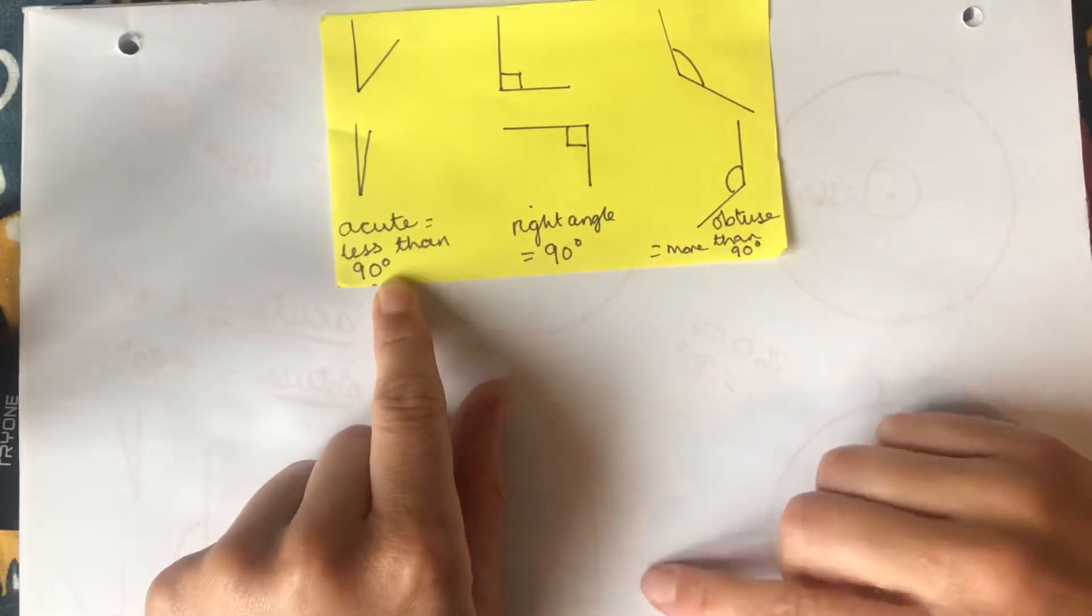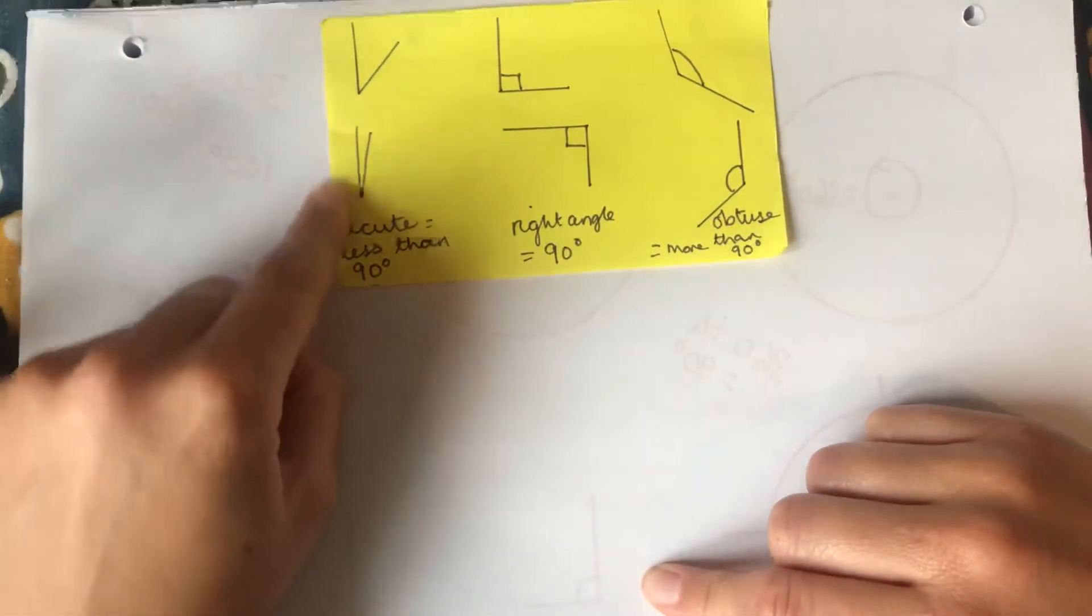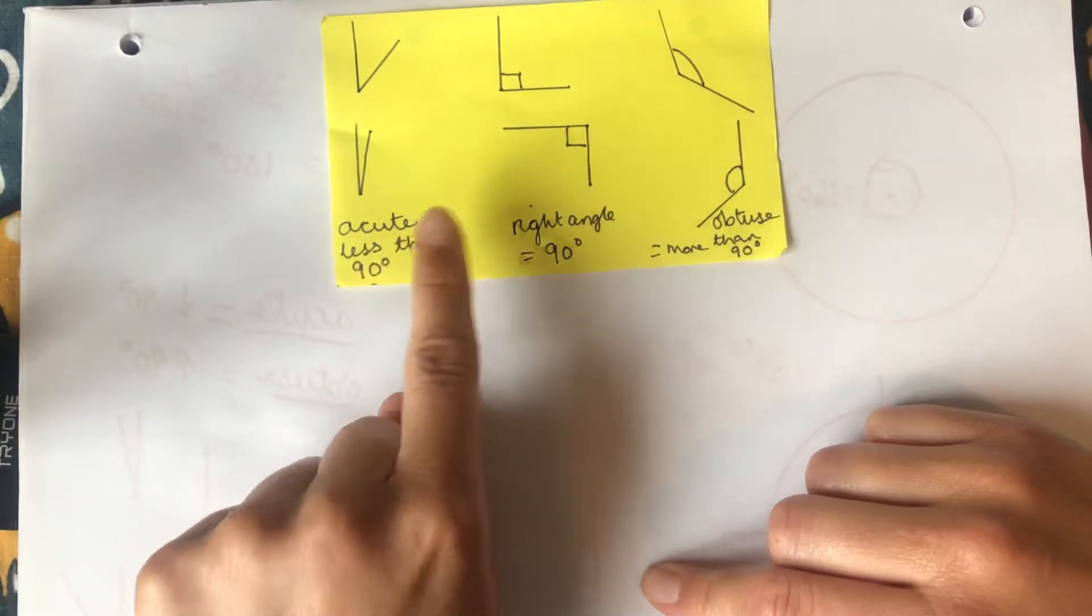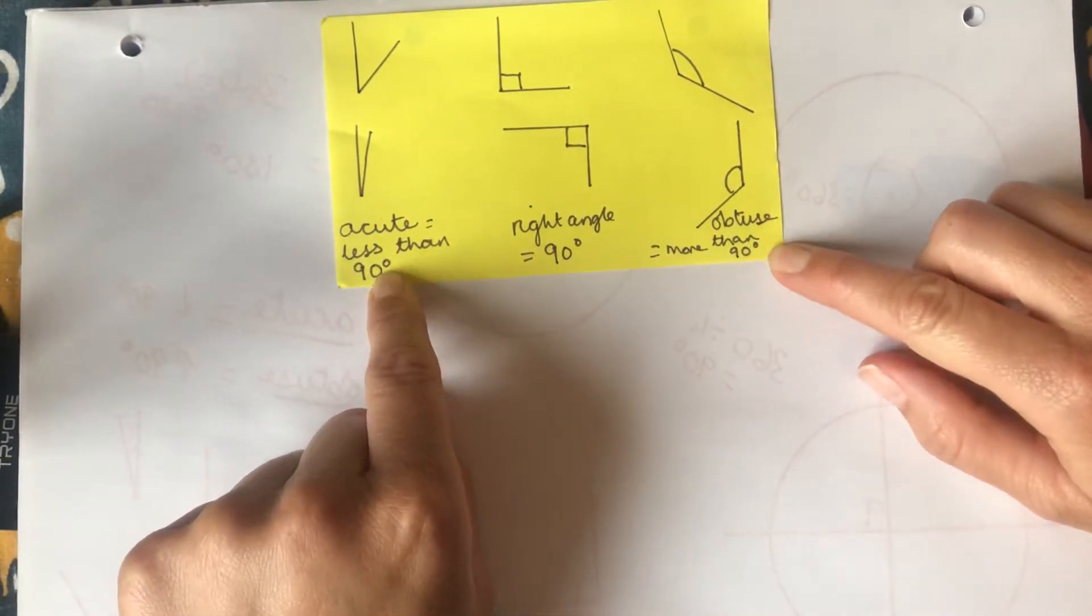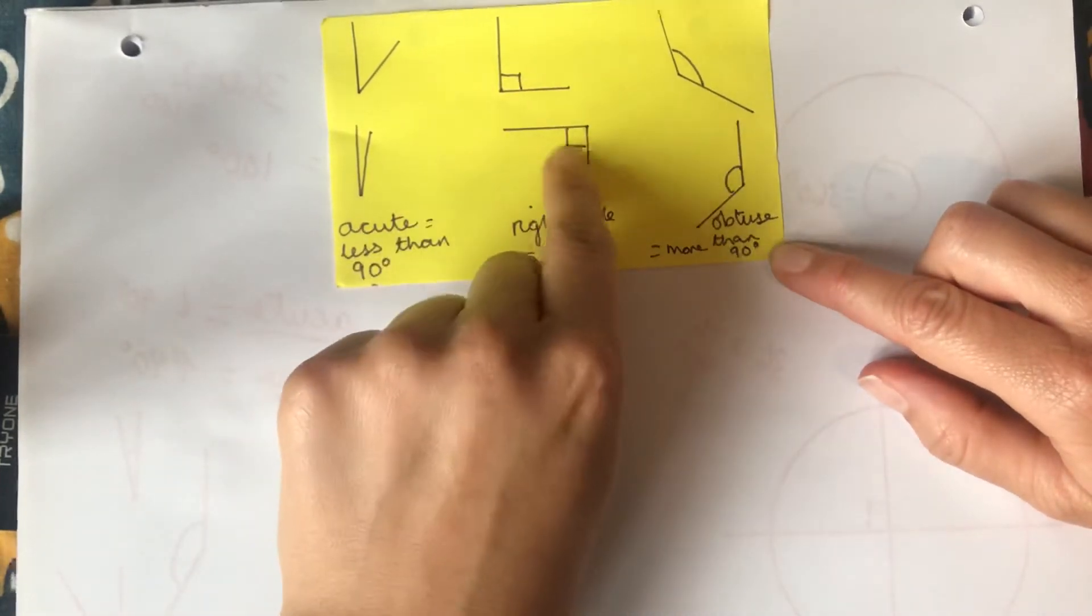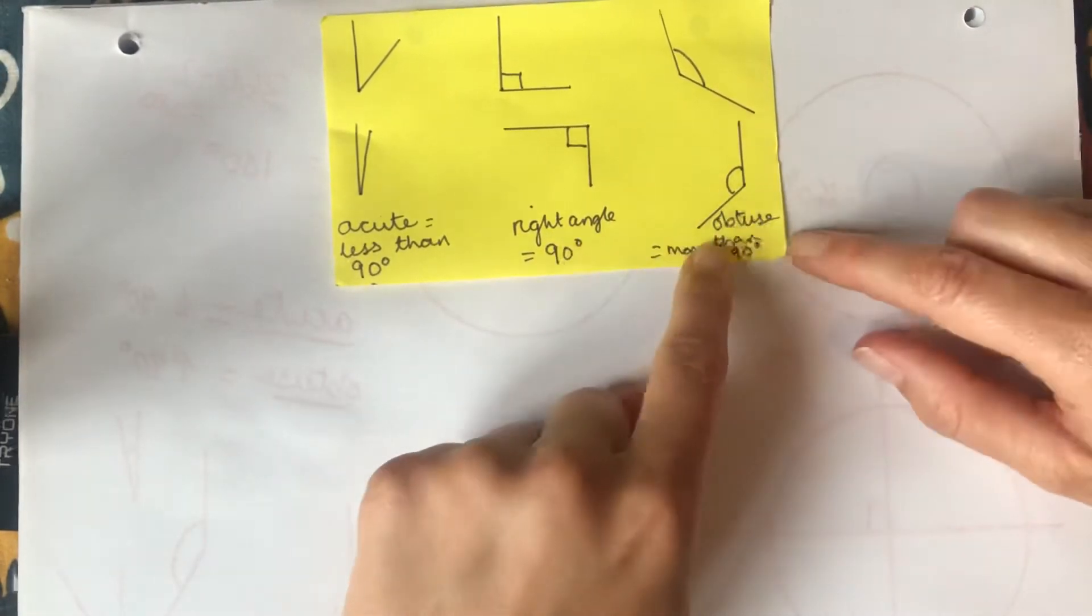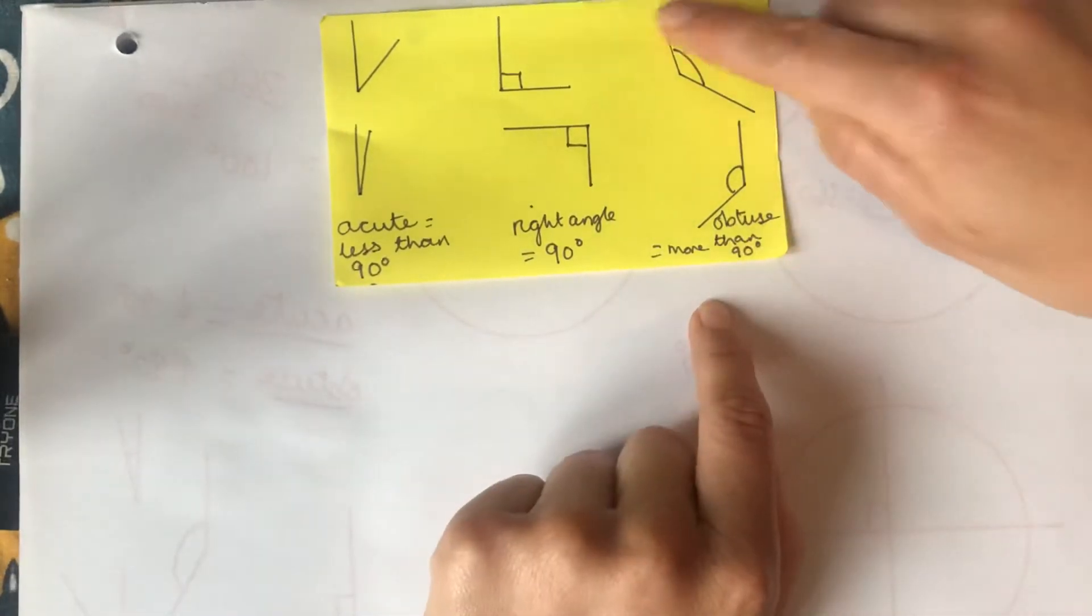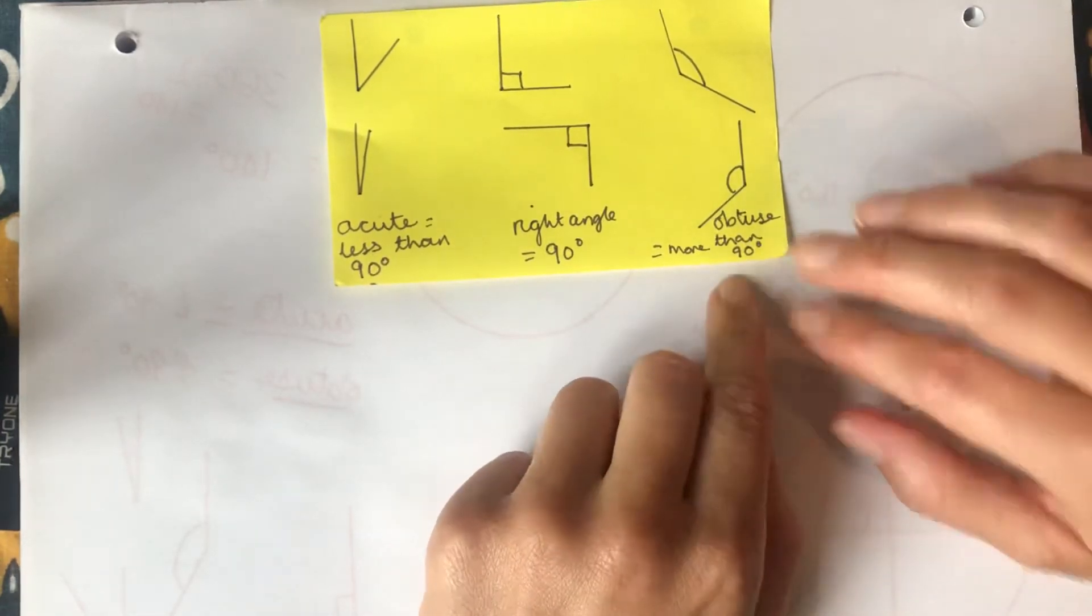So I've got a reminder here: acute, these are both acute angles. There are obviously lots more acute angles and acute means less than 90 degrees, anything less than 90, so 89 degrees would still be an acute angle. Right angles, obviously they show you by having a little square in the corner, are exactly 90 degrees. And obtuse, which means big, are any angles more than 90 degrees.